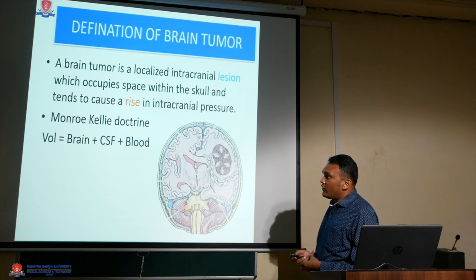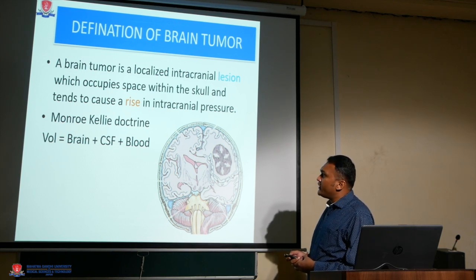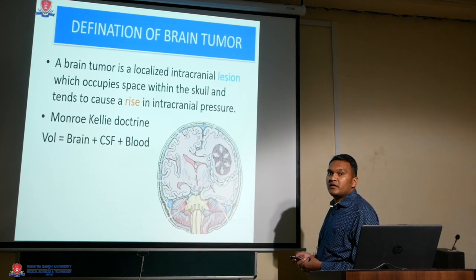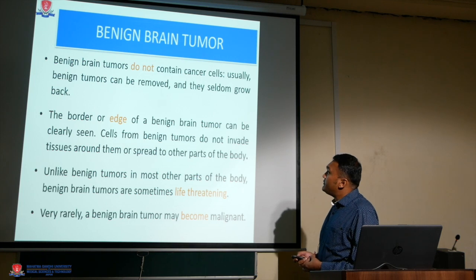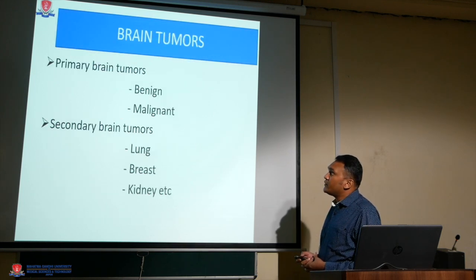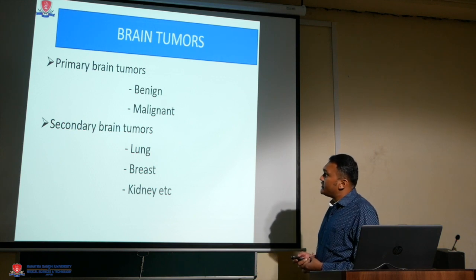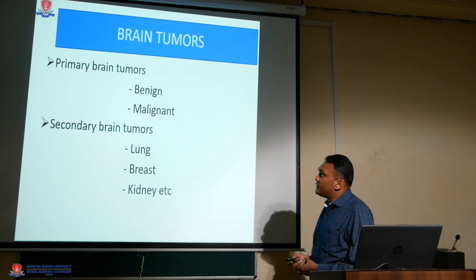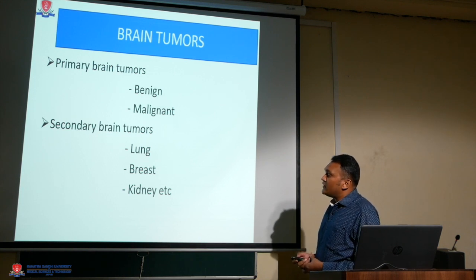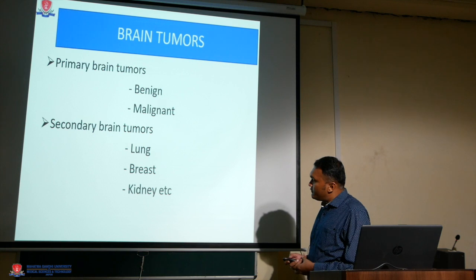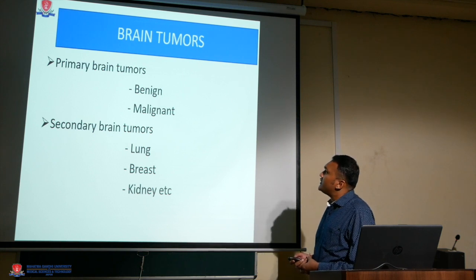We classify brain tumors as per primary and secondary types. Primary brain tumors are divided into two types: benign and malignant. Secondary brain tumors come from the lungs, breast, kidney, and other organs.